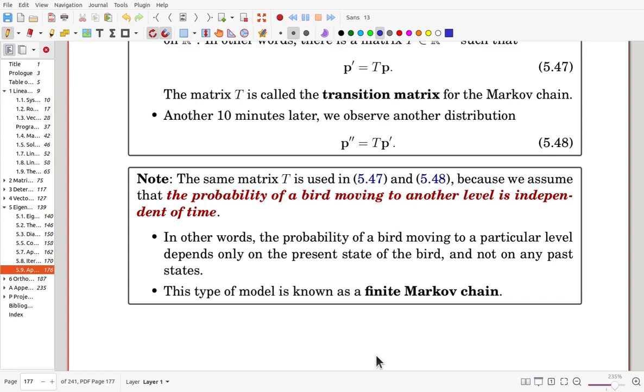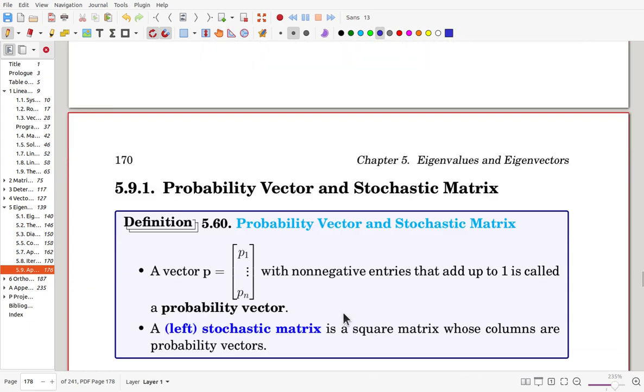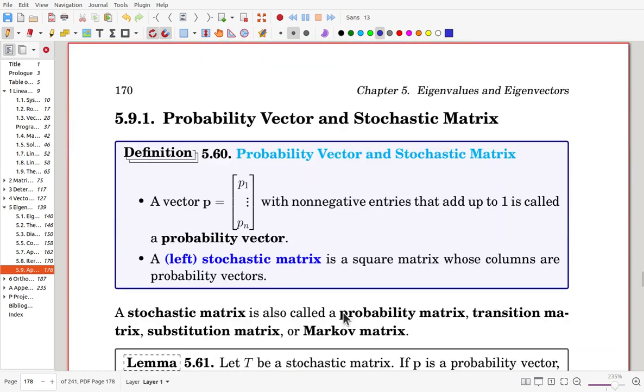But we have a finite number of states, so that we call it a finite Markov chain. Now we'll define some official terms.